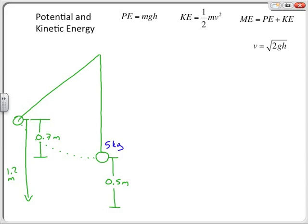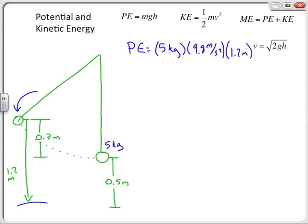How much potential energy does the bowling ball have? We need a reference location — let's call the ground the reference. Potential energy equals mgh, so we take 5 kg times 9.8 m/s² times 1.2 meters, which gives a potential energy of 58.8 joules.